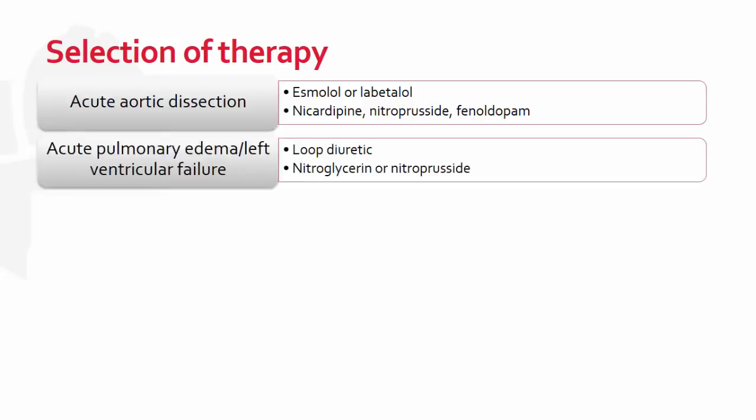In patients presenting with acute pulmonary edema or left ventricular failure, a loop diuretic such as intravenous furosemide can be administered depending on the degree of volume overload. Agents such as nitroglycerin or nitroprusside can also be used in this situation. Agents that decrease contractility, such as beta blockers and select calcium channel blockers, should be avoided in these patients.